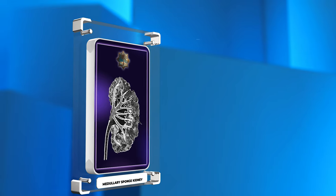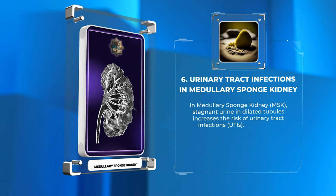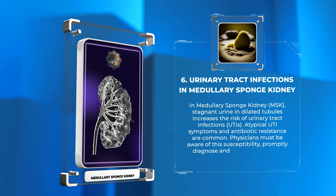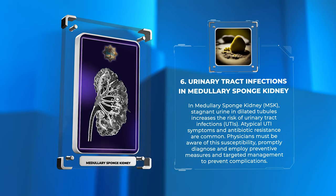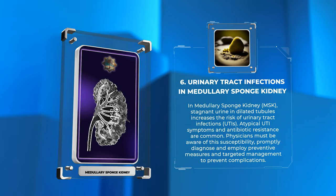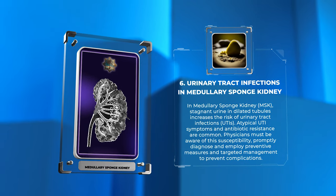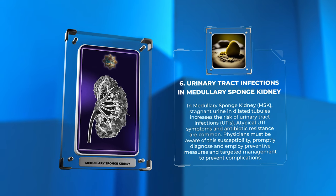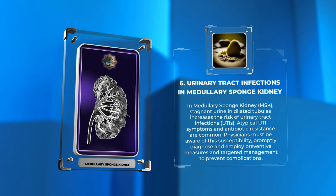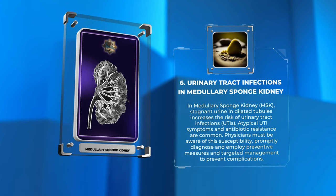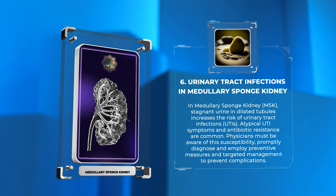In medullary sponge kidney, MSK, stagnant urine and dilated tubules increase the risk of urinary tract infections, UTIs. Atypical UTI symptoms and antibiotic resistance are common. Physicians must be aware of this susceptibility, promptly diagnose, and employ preventive measures and targeted management to prevent complications.